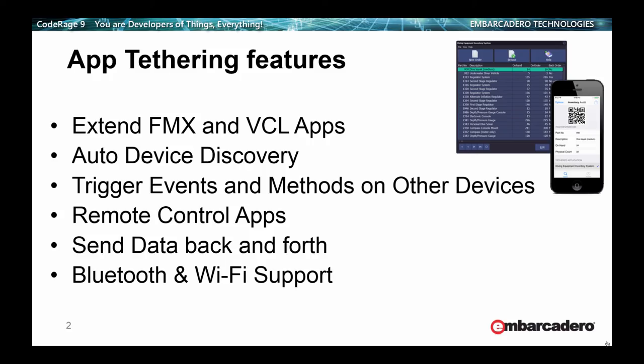We'll see how easy it is to auto-discover other applications that are using app tethering, running either on the same device as your application or on other connected devices. With app tethering, your application can publish actions and then other applications can remotely invoke any of those actions. You can use app tethering to share data between applications, including standard data types and streams. And you have the choice to use either Bluetooth or Wi-Fi.